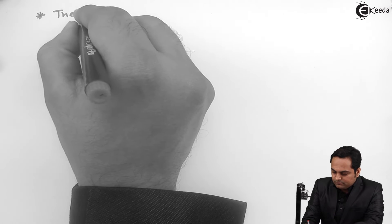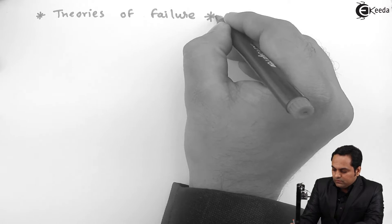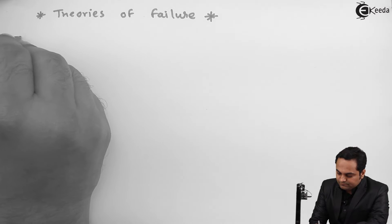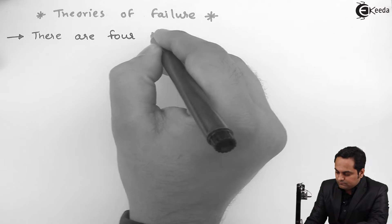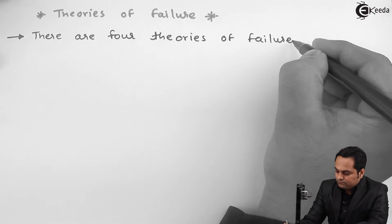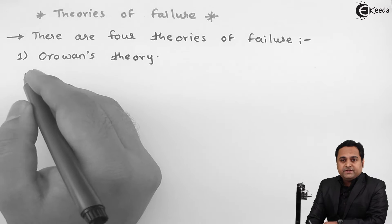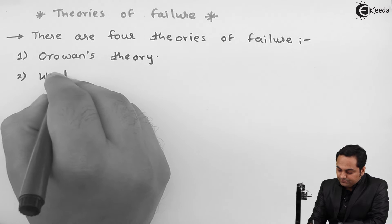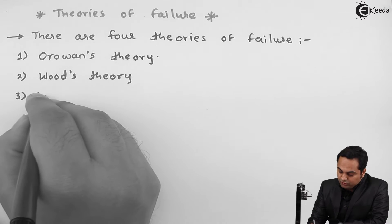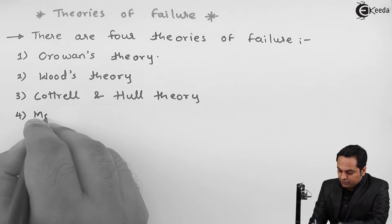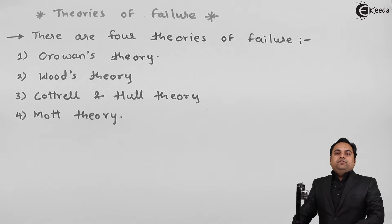Hello friends, in this video we will see what are the theories of failure. In total there are four theories of failure: the first one is called Orowan's theory, the second is Wood's theory, the third is Cottrell and Hull theory, and the fourth one is called Mott theory.